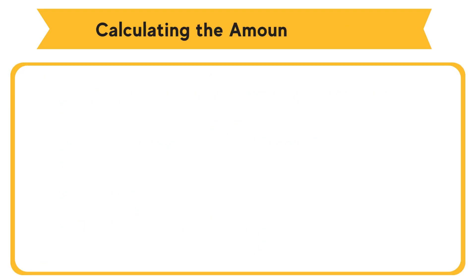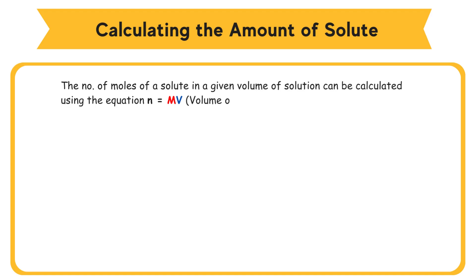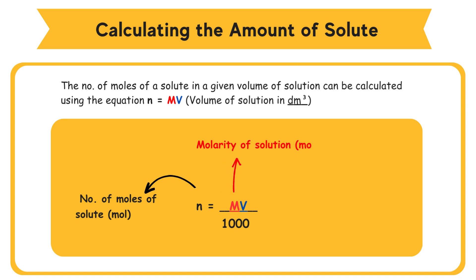Calculating the amount of solute. The number of moles of a solute in a given volume of solution can be calculated using the equation: N equals MV divided by 1000, where N equals number of moles of solute (mol), M equals molarity of solution (mol/dm³), and V equals volume of solution (cm³).